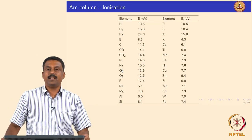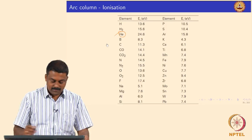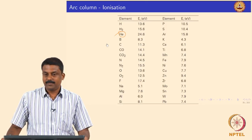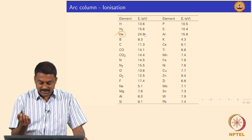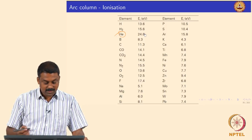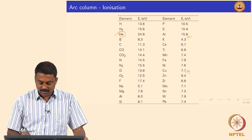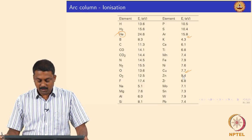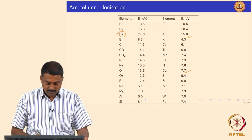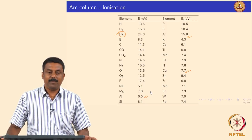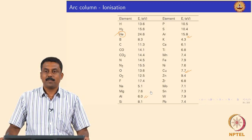I just tabulated the ionization energy of various elements. Helium has the maximum at 24.6 electron volts, and argon is at 15.8 eV. If you look at metals, they are very low — copper for example is 7.7 eV, close to one third of helium. Aluminium is much lower as well. Therefore when you have metal vapor, you can ionize them easily at lower temperatures.